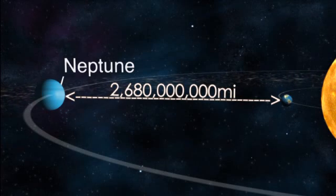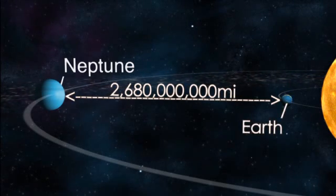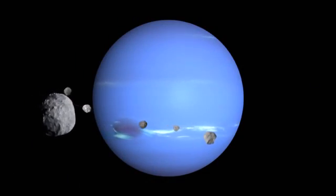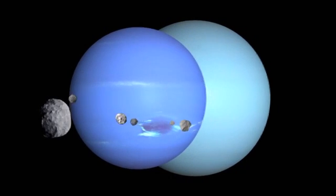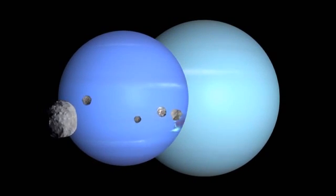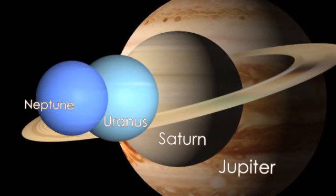Neptune is about 2.7 billion miles from Earth. It has 13 known moons and is similar in size to Uranus, making it the smallest of the four gas giant planets in the outer solar system.